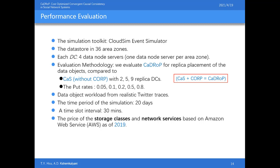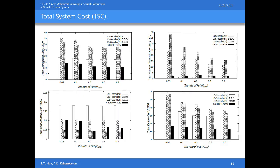The performance evaluations are conducted as follows: the data store is deployed across 36 area zones in the CloudSim event simulator, with each data center composed of four data node servers. We evaluate the CareDrop protocol for replica placement, comparing against two baselines with different predetermined numbers of replica data centers with cache control. The put rates vary from 0.05 to 0.8, using realistic Twitter traces as workload data, simulated over 20 days with a time-slot interval of 30 minutes. Prices of storage classes and network services are based on Amazon Web Services 2019. The four figures present storage cost, network transmission cost, transaction cost, and total system cost. Although CareDrop's cache control slightly increases network transmission and storage costs, it achieves the lowest total system cost compared to baselines.